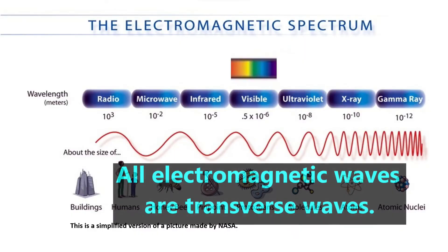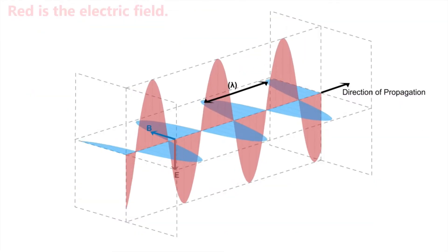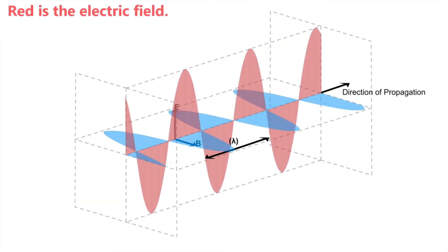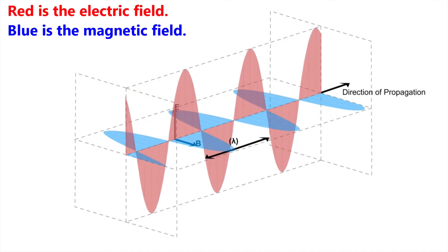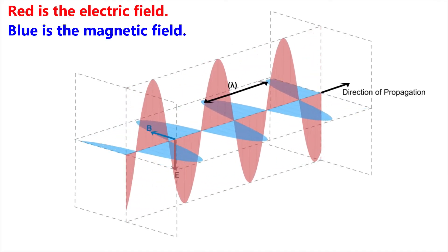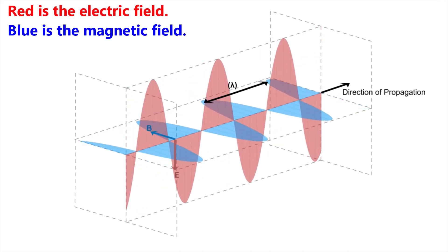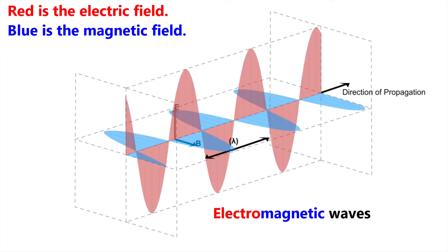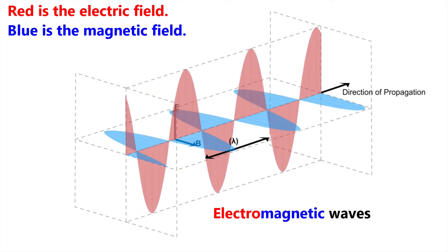All electromagnetic waves are transverse waves. The red waves represent the oscillating electric field, and the blue waves represent the oscillating magnetic field. That's why we call them electromagnetic waves.